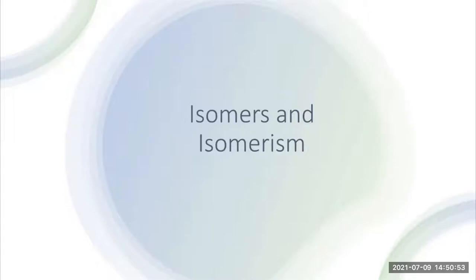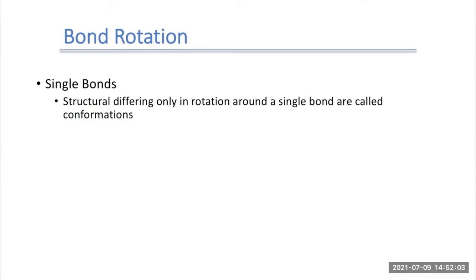In this video, we'll learn about isomers and isomerism. Before we start, we should define what an isomer is. Isomers are compounds that have the same molecular formula but a different arrangement of those atoms. They have the same formula, same number of atoms, but just a different arrangement — either a different spatial arrangement or a different structural arrangement, meaning atoms bonded differently.